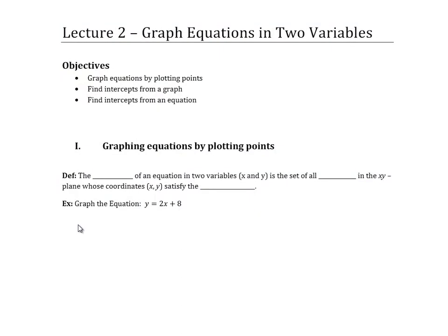In lecture two, we're going to begin talking about how we graph equations in two variables. Building on what we learned in lecture one about the rectangular coordinate system, we're now going to plot points that satisfy a given equation. The set of all points that satisfy an equation is basically the graph. The graph of an equation, by definition, is the set of all points in the xy plane whose coordinates satisfy the equation.